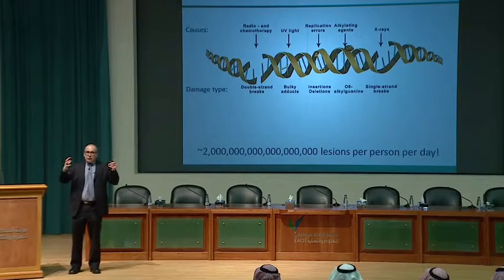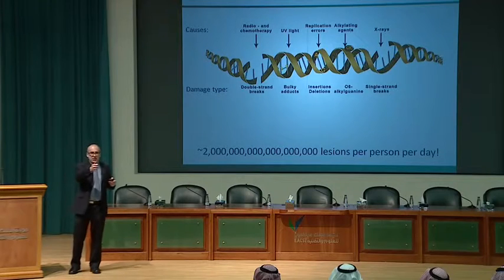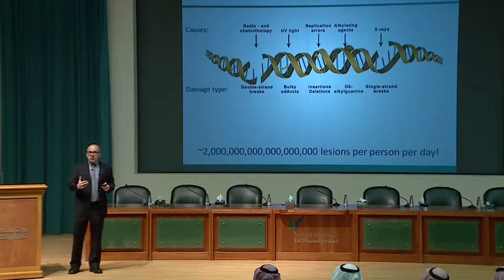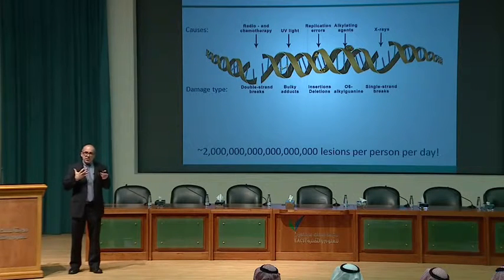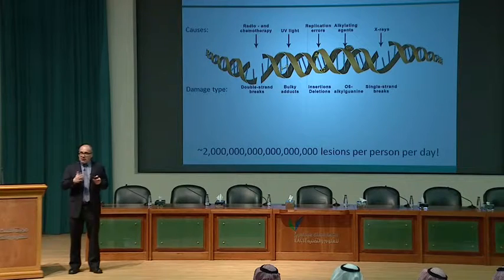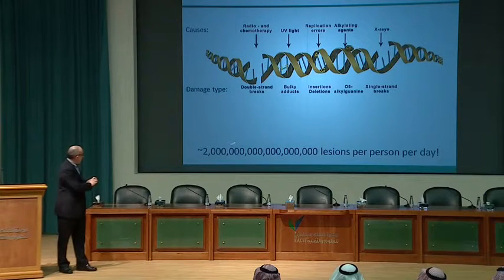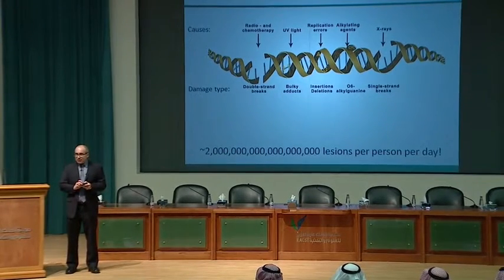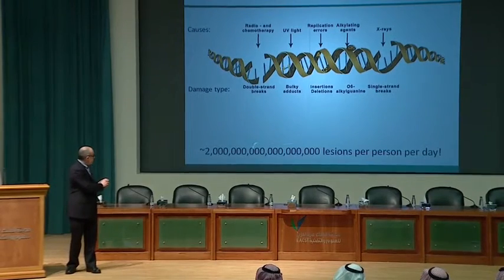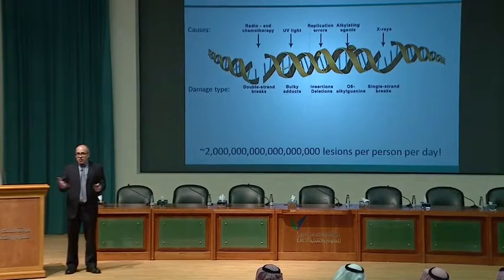If one person sat in a room away from radiation sources — just from endogenous metabolism — every cell in that person would receive approximately 100,000 DNA lesions per day. Even at rest, the human body must repair this number of DNA lesions per day. If we could not recognize and repair those lesions, our cells would very quickly cease to function and we would die.